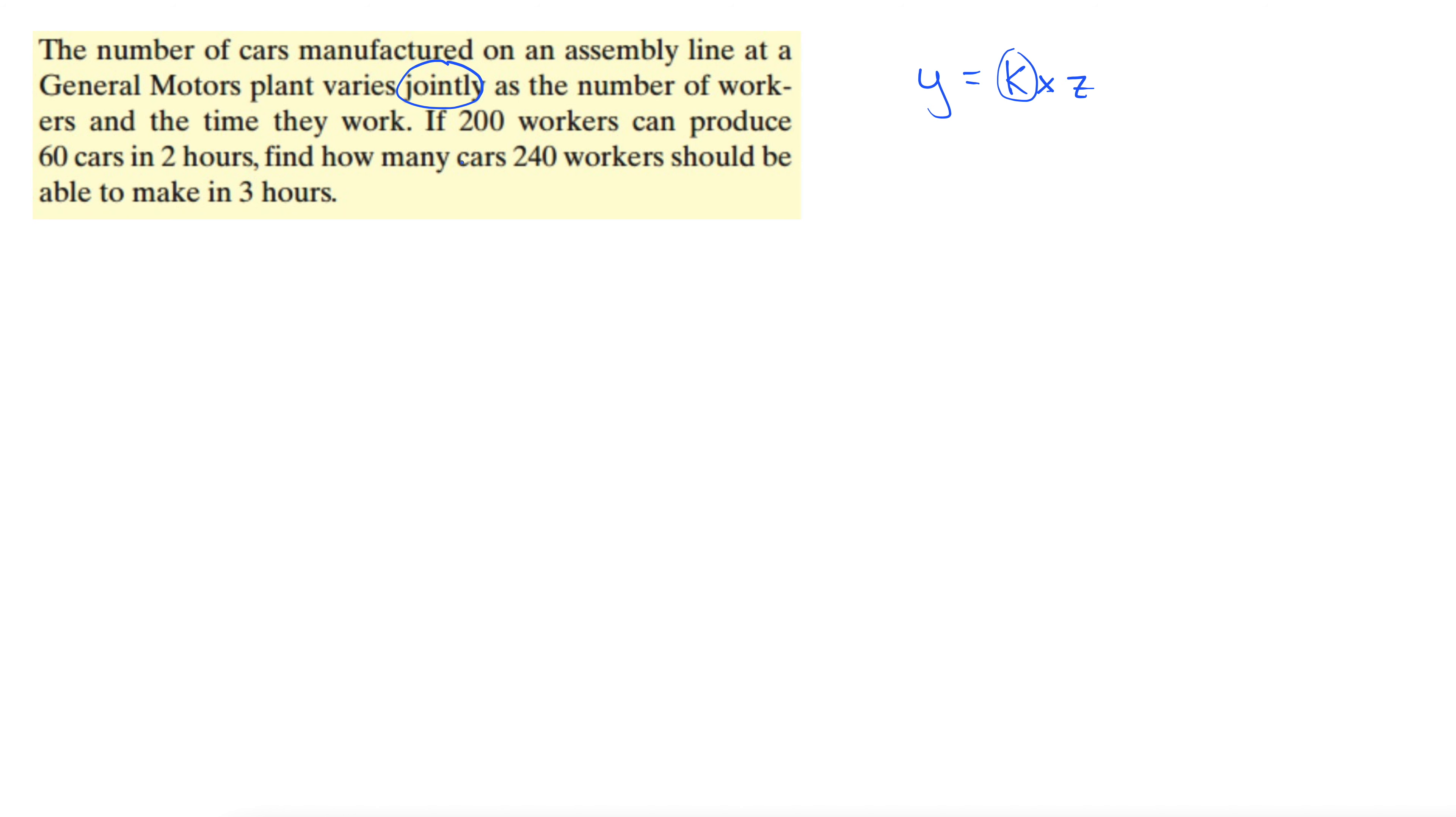We need to get some better variables here. Let's let the number of cars be c, let's let the number of workers be w, and let's let the time they work be t. I'm going to make that a lowercase t. So that gives us the joint equation here: C equals k times wt.